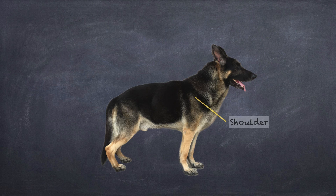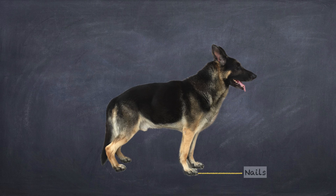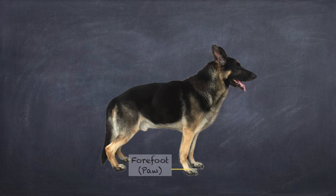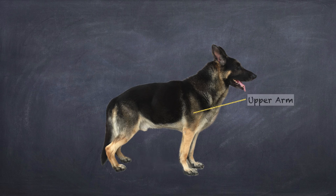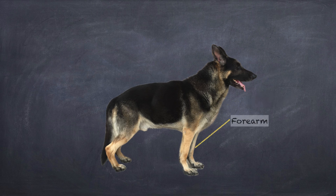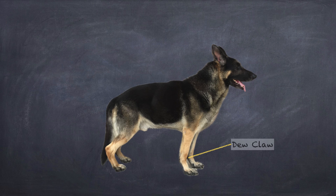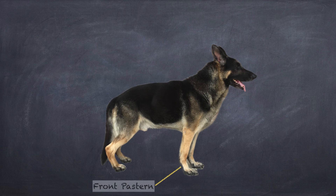The shoulder. The toes. The nails. The pads. The forefoot or the paw. Upper arm. Forearm. Dew-claw. Wrist. Front pastern. Elbow.